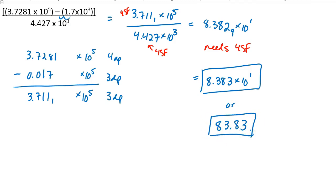This one was kind of interesting because if you were to look at the problem at the very beginning, you may have said this only has 2 sig figs or 1 decimal place, so my answer should only have 2 sig figs. If you use that thought process, you'd be wrong. With these combination problems, you've got to follow the rules as you go. I hope you enjoyed the video and thanks for listening.